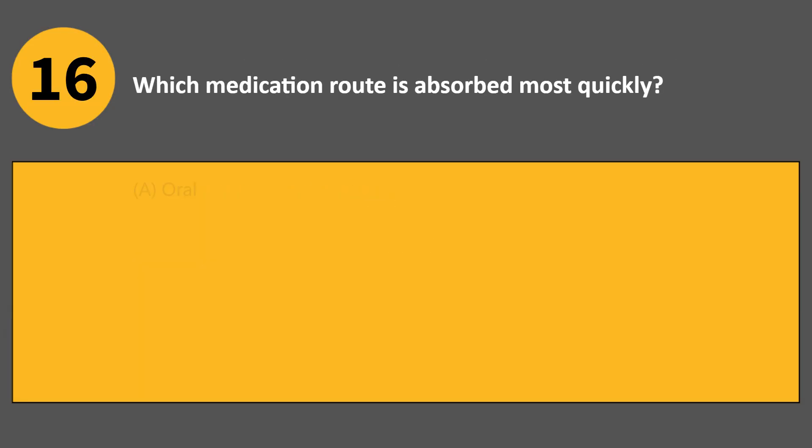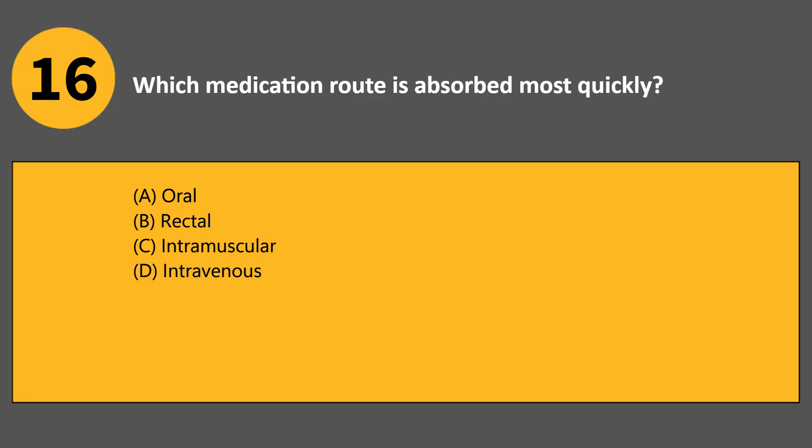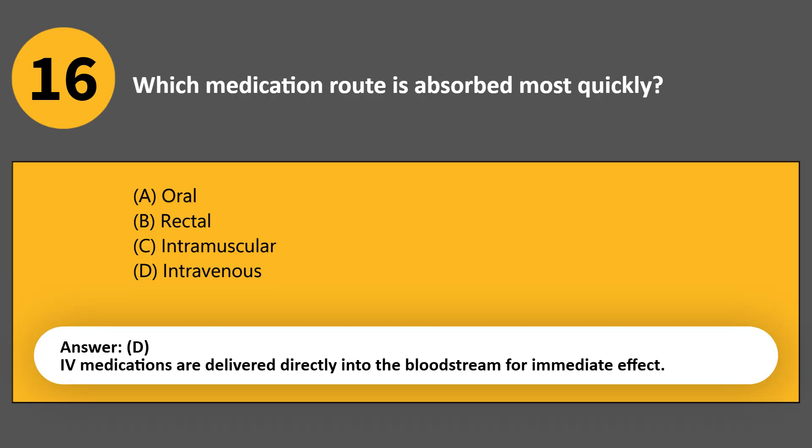Which medication route is absorbed most quickly? A. Oral. B. Rectal. C. Intramuscular. D. Intravenous. Answer D. IV medications are delivered directly into the bloodstream for immediate effect.